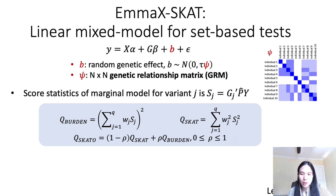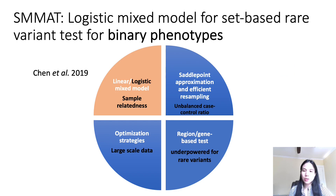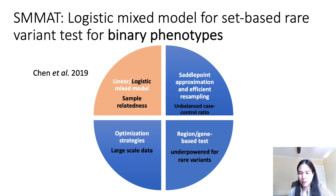This is similar to what Zhang Chen introduced based on linear regression with unrelated samples. Similar to single variant association tests for binary phenotypes with related samples, logistic mixed models can be used for set-based rare variant tests for binary phenotypes. SMAT is a logistic mixed model method for set-based rare variant tests for binary phenotypes.